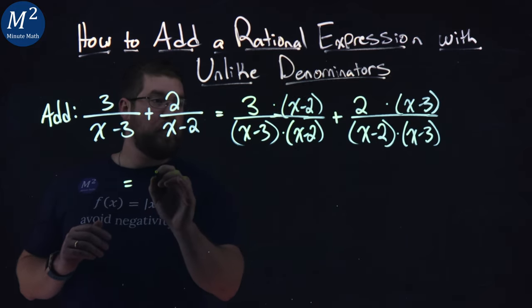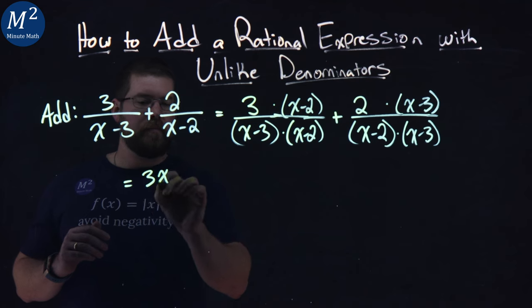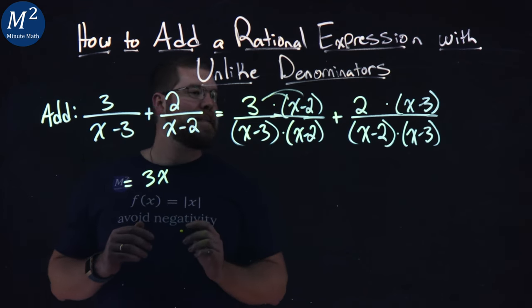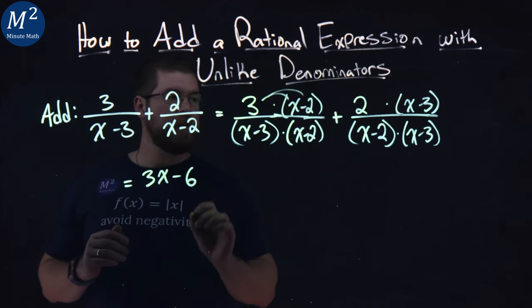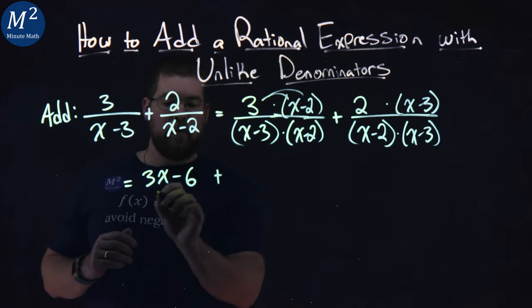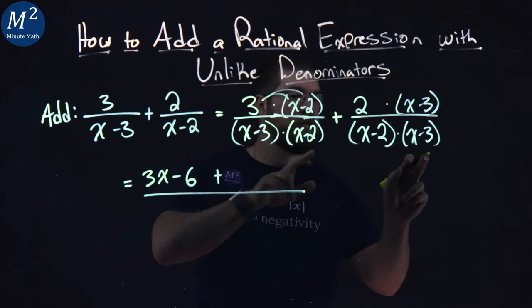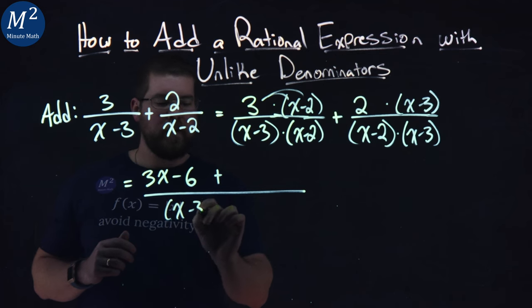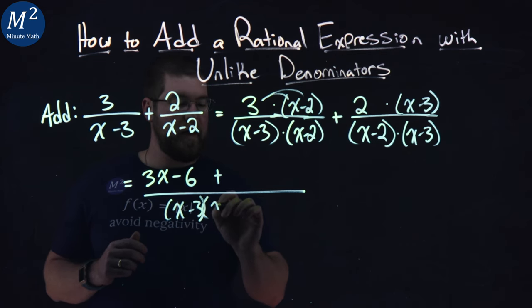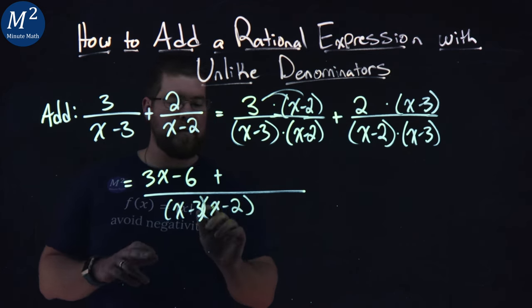All right. Numerator, 3 times x is a 3x. 3 times a minus 2 is a minus 6 here. Plus, now remember, this denominator is all the same, right? We have an x minus 3 here times an x minus 2 in the denominator. There's two parentheses.